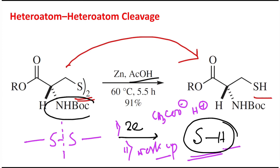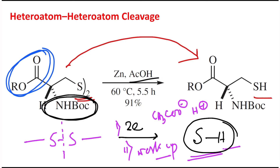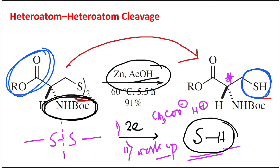In this disulfide example, a BOC-protected amino acid is present — BOC protection is selective and labile, and the carboxyl group is also protected. Under these reaction conditions, only the S–S bond is cleaved. Importantly, peptide racemization does not occur; the asymmetric centers of the amino acid are preserved. This chemoselectivity is a key advantage of zinc/acetic acid. A separate discussion on peptide racemization is available in another video.